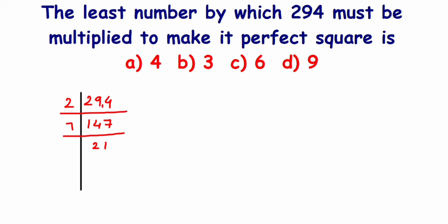Now this is divisible by 7, so I'll take 7. 7 times 2 is 14, 7 times 1 is 7. Now this is again divisible by 7. 7 times 3 is 21, and next we have 3. So 3 times 1 is 3. Let's rewrite this: 294 is equal to 2 into 7 into 7 into 3.